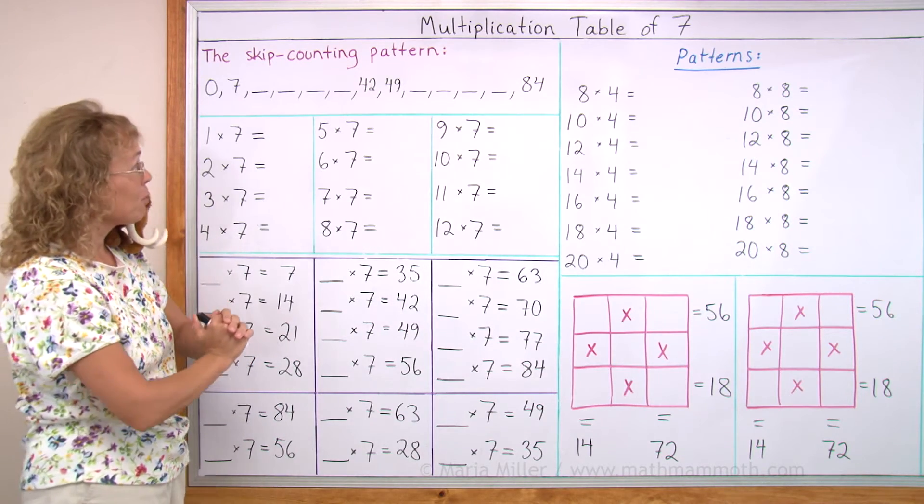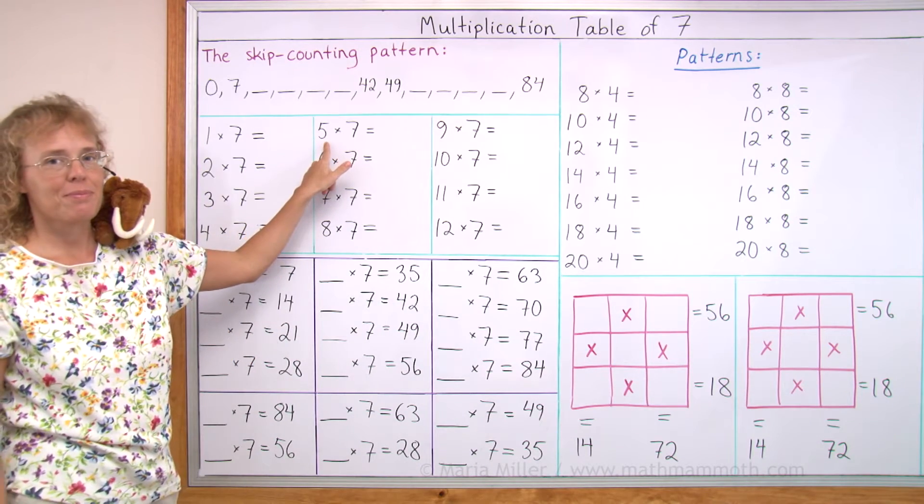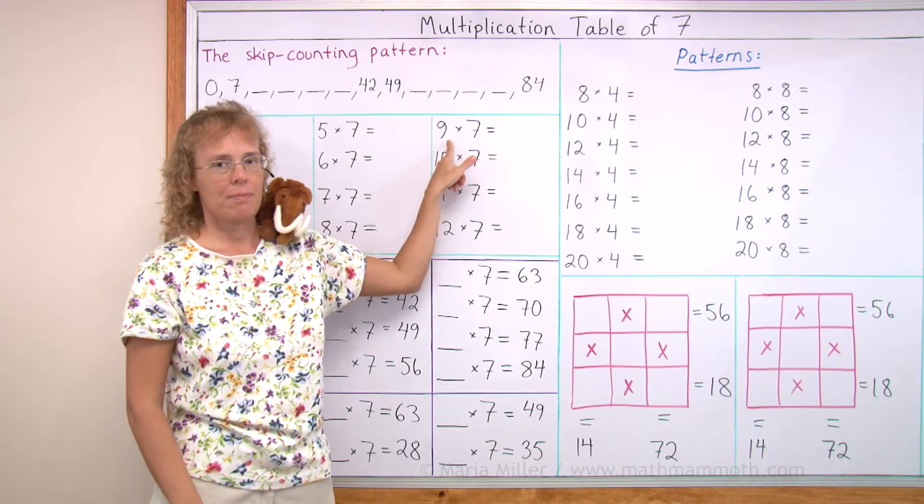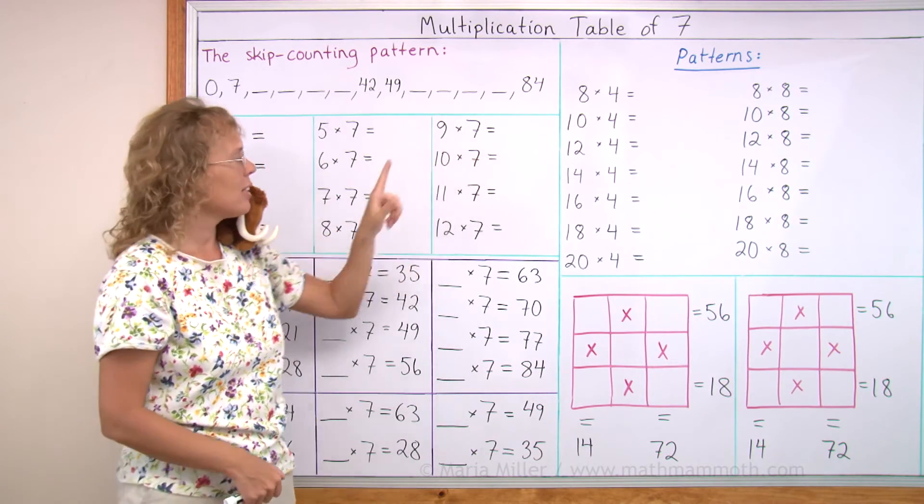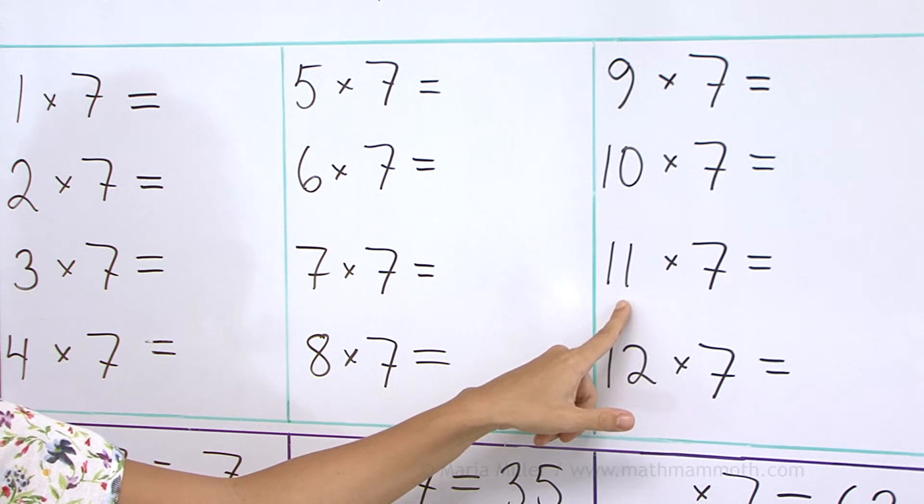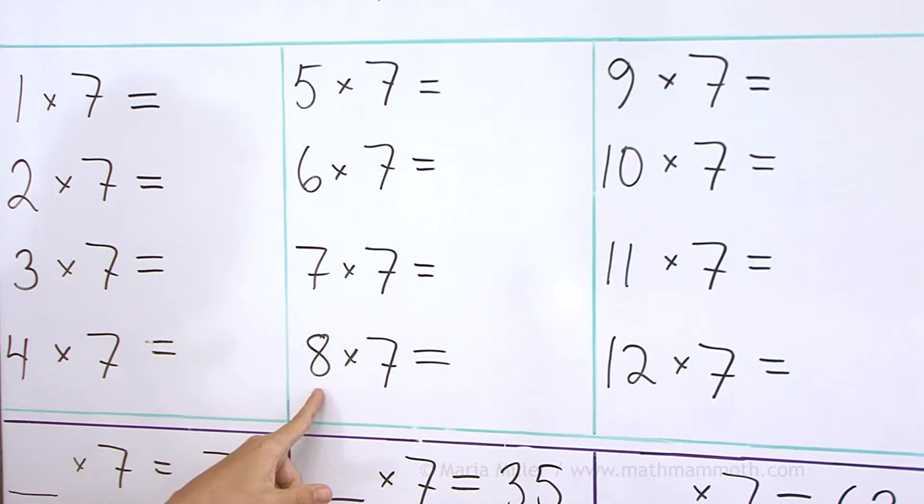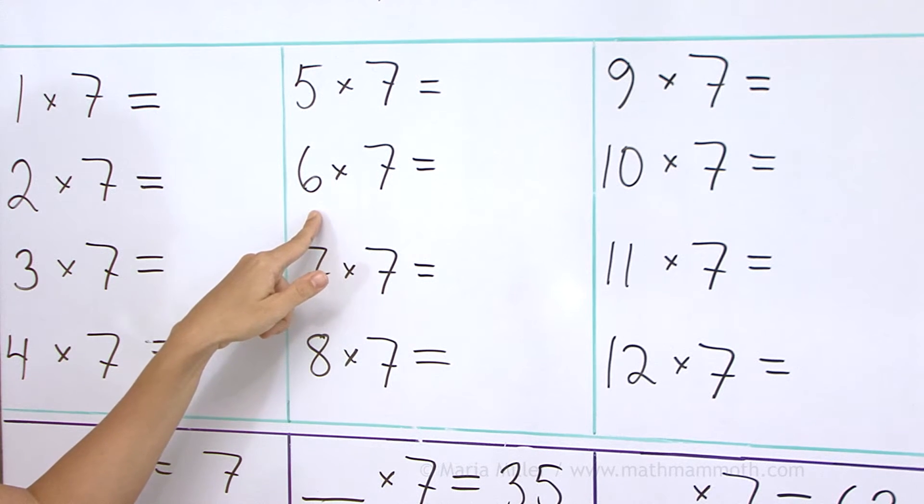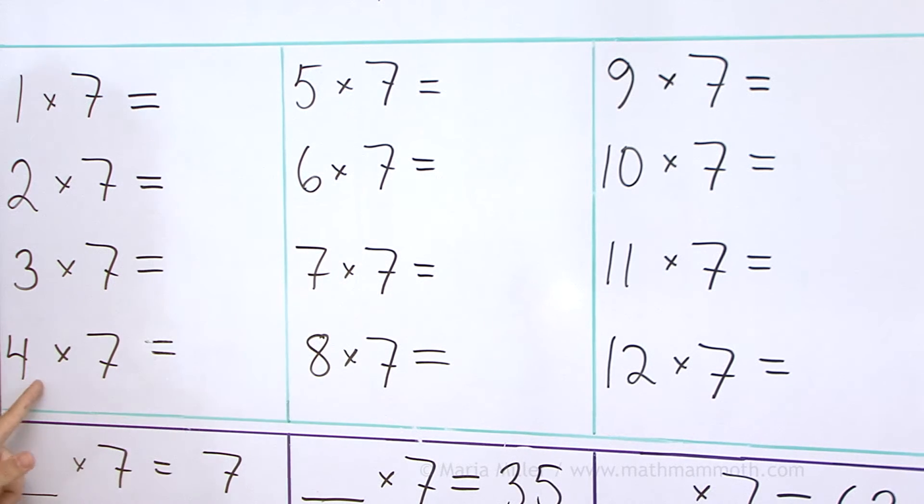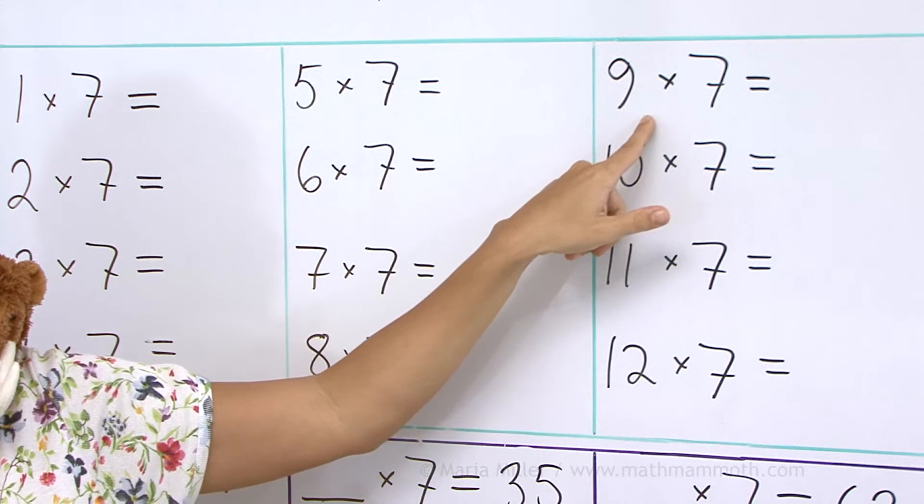So let's get started. What would be 5 times 7? 35. 9 times 7? 63. 11 times 7? 77. 12 times 7? 84. 8 times 7? That's your rhyme. It's 56. 7 times 7? 1 less than 50. 49. 3 times 7? 21. 6 times 7? 42. 4 times 7? 28. 9 times 7? 63.